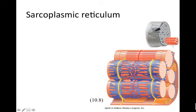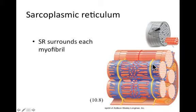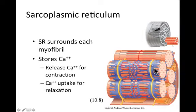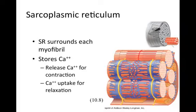At the myofibril level is the sarcoplasmic reticulum, or SR, which is synonymous with smooth ER in any cell. In this case it stores calcium. Calcium ions are necessary for the contraction of muscle. Each myofibril has a complete supply of calcium stored around it. For the muscle to contract, that calcium needs to be released so it can interact with the actin and myosin inside the filaments. For the muscle to relax, the calcium needs to be reabsorbed back into the SR.